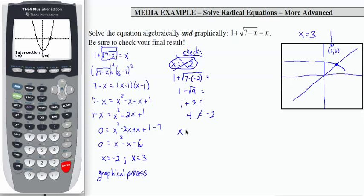Let's double check x equals 3. If I plug in 3 to the left hand side, I get 1 plus the square root of 7 minus 3, which equals 1 plus the square root of 4, which equals 1 plus 2 or 3. And my x here is 3. So that one checks. So the only solution to this equation is x equals 3.